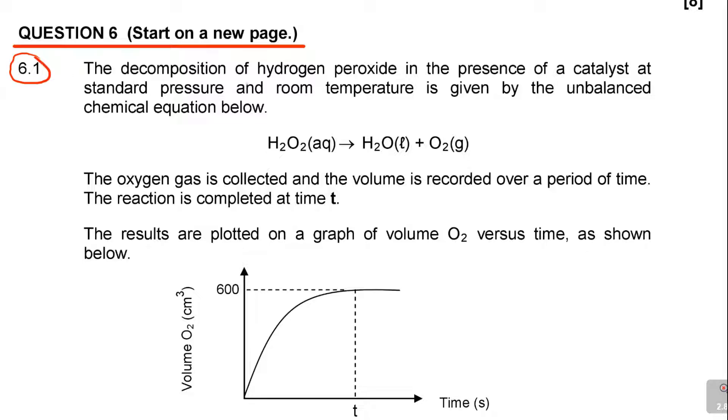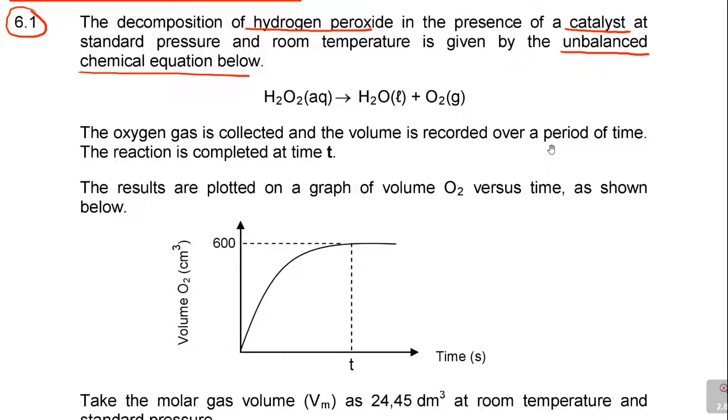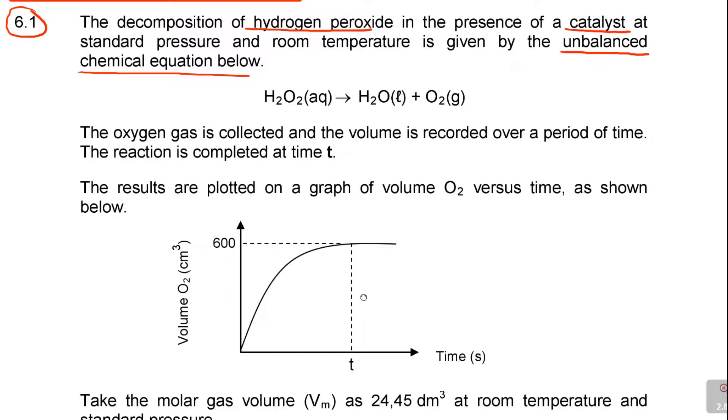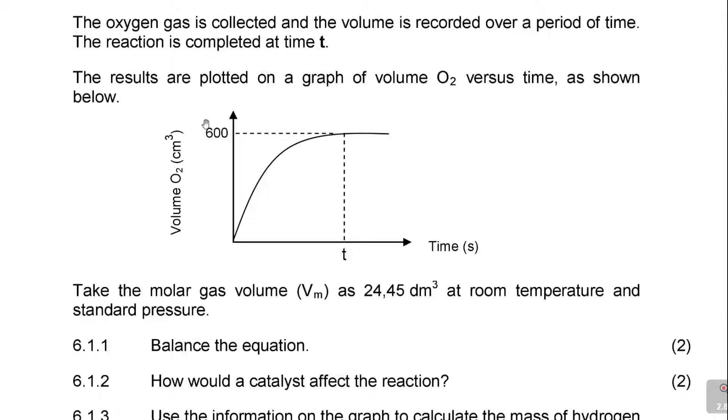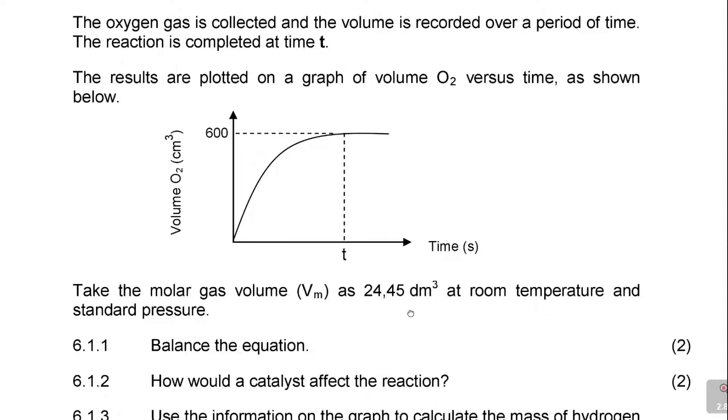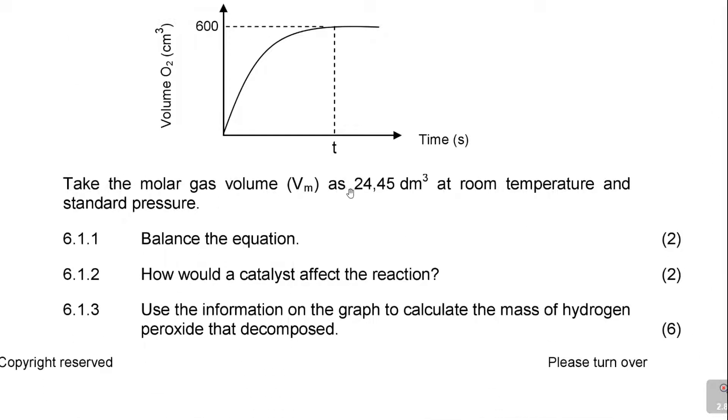Question 6.1. The decomposition of hydrogen peroxide in the presence of a catalyst at standard pressure and room temperature is given by the unbalanced chemical equation below. Be careful of such words, unbalanced. They give you hydrogen peroxide, it gives us water plus oxygen. You see, it's decomposing. Take the molar volume Vm as 24.45 dm cubed at room temperature and standard pressure. 6.1.1 balance the equation.